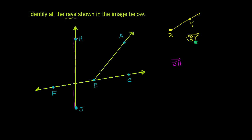If you go to point h, there is no ray h,j, because the line ends at j — it doesn't keep going forever. And there is no ray defined by h alone, because with just one point you're not specifying a direction. There's no second point to help specify the direction, so you can't define a ray starting there.